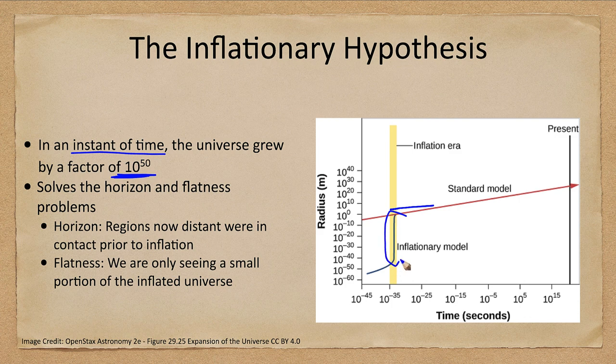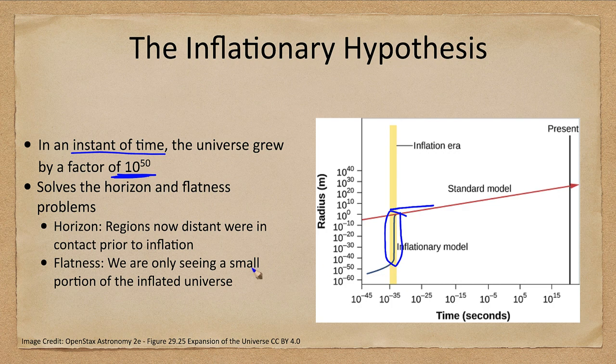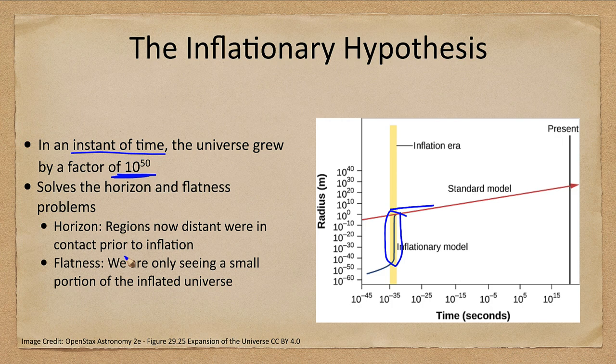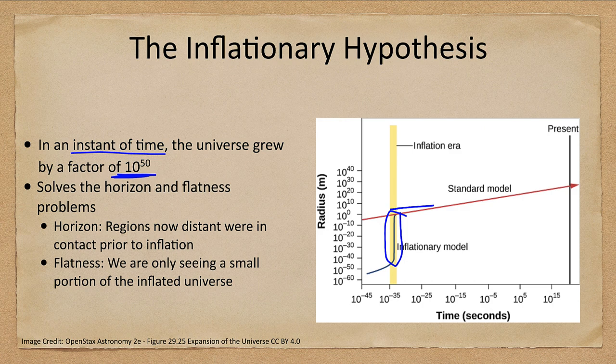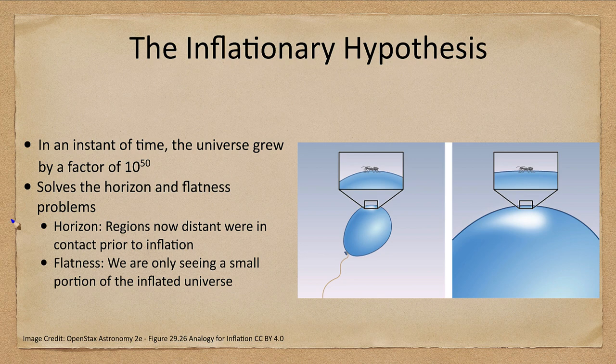This very small era of inflation that could have taken place could have explained then the two problems that we had and can solve these two problems with the flatness and the horizon problem. By zipping up in that tiny fraction of time, the universe expanded and what we're seeing now - let's take a look at a couple examples here. What are we looking at for the image here? Why does it look so flat? Why are the distant regions in contact?